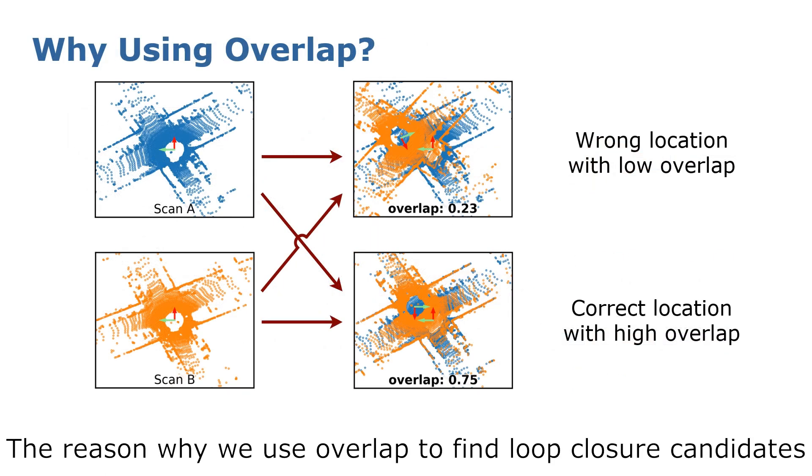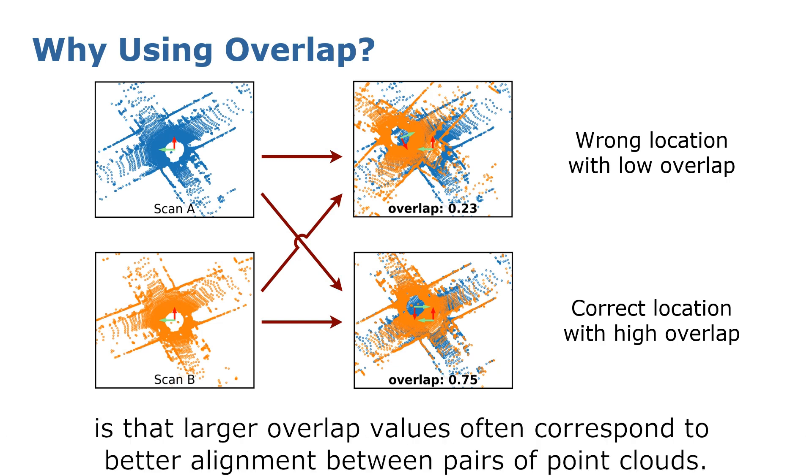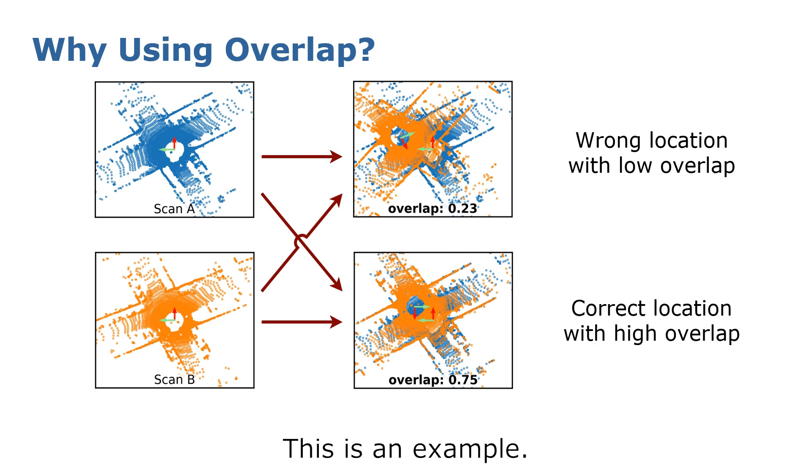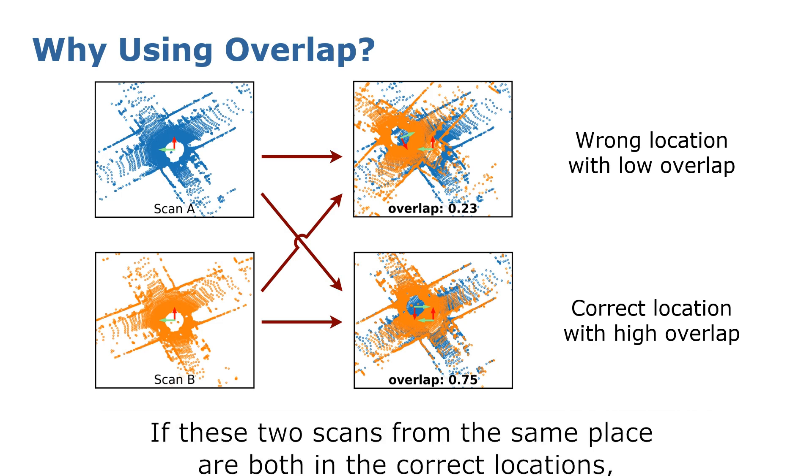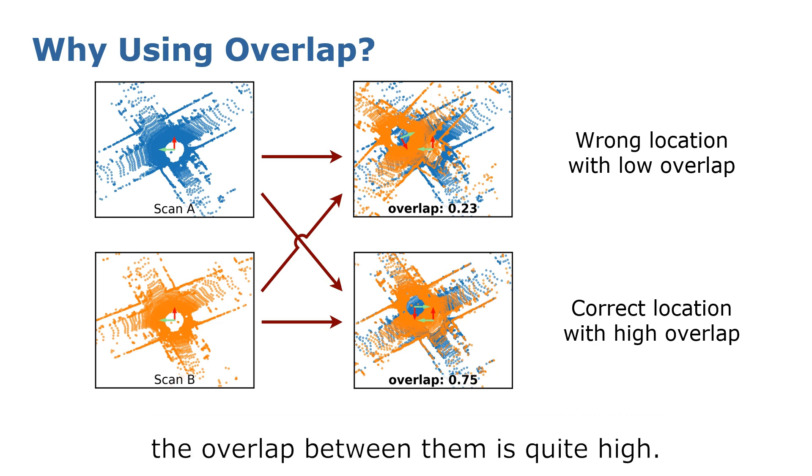The reason we use overlap to find loop closure candidates is that larger overlap values often correspond to better alignment between pairs of point clouds. This is an example. We have two LiDAR scans: Scan A, colored blue, and Scan B, colored orange. If these two scans from the same place are both in the correct locations, the overlap between them is quite high. Otherwise, if they are in the wrong locations, the overlap between them is lower.